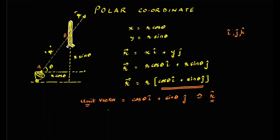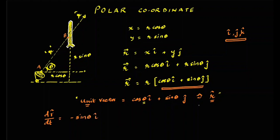If I differentiate this unit vector, we first understand that r̂ is not constant because theta is constantly changing. Therefore this unit vector is not constant, unlike î, ĵ, and k̂ which were constant unit vectors whose direction did not change. But here, because of theta, the direction is changing. So if I differentiate r̂ — d(r̂)/dt — I will get minus sin theta î plus cos theta ĵ, multiplied by dθ/dt.